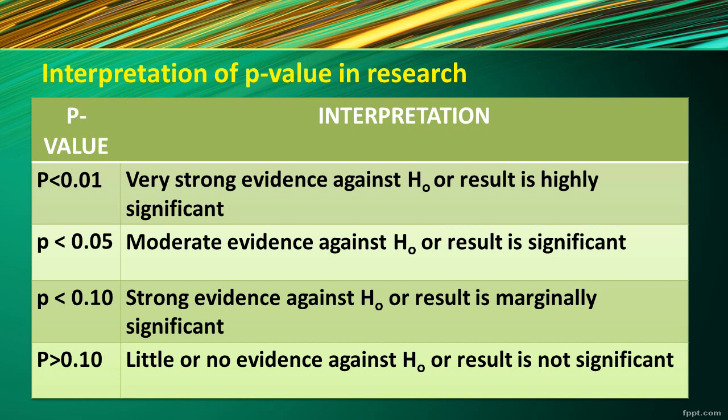To summarize p-value interpretation: if p is less than 0.01, it shows very strong evidence against the null hypothesis. If less than 0.05, the evidence will be moderate. If p is less than 0.01, there will be strong evidence against the null hypothesis. But if p is more than 0.10, there will be little or no evidence against the null hypothesis.